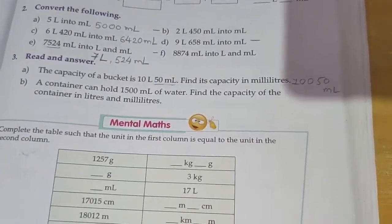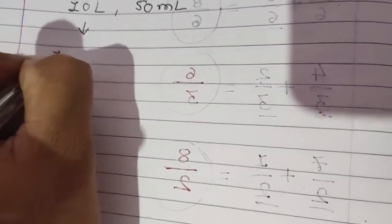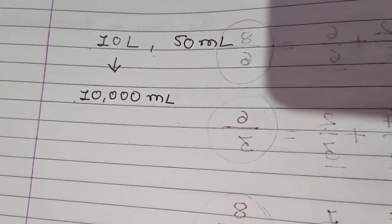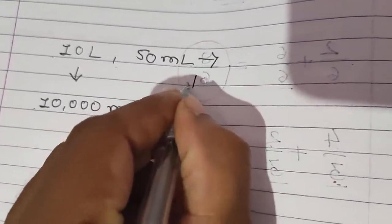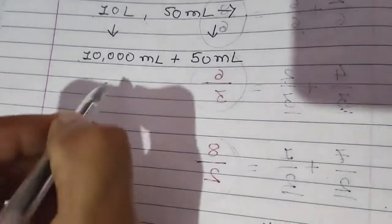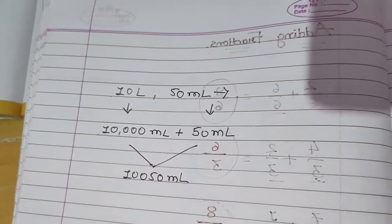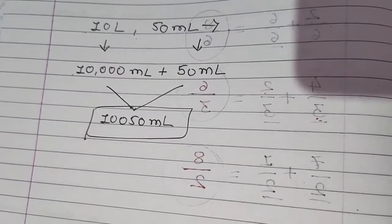Let me also show the working. The bucket's capacity is 10 liters and 50 ml. So 10 liters becomes 10,000 ml. The 50 ml stays as it is because we need the answer in ml. So we add both: 10,000 ml plus 50 ml. Our answer is 10,050 ml.